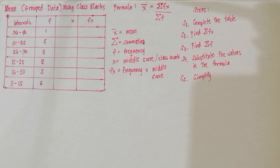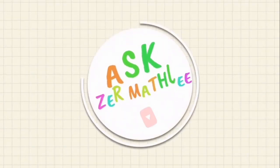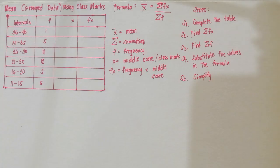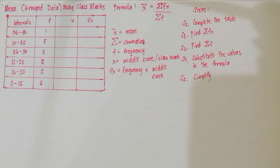Hi guys! So for today, I'm going to discuss how to solve for the mean of grouped data. There are two ways to solve for the mean of grouped data. The first one is the use of the class marks, and the second one is the use of coded deviation. I am going to discuss first how to solve for the mean of grouped data using class marks.